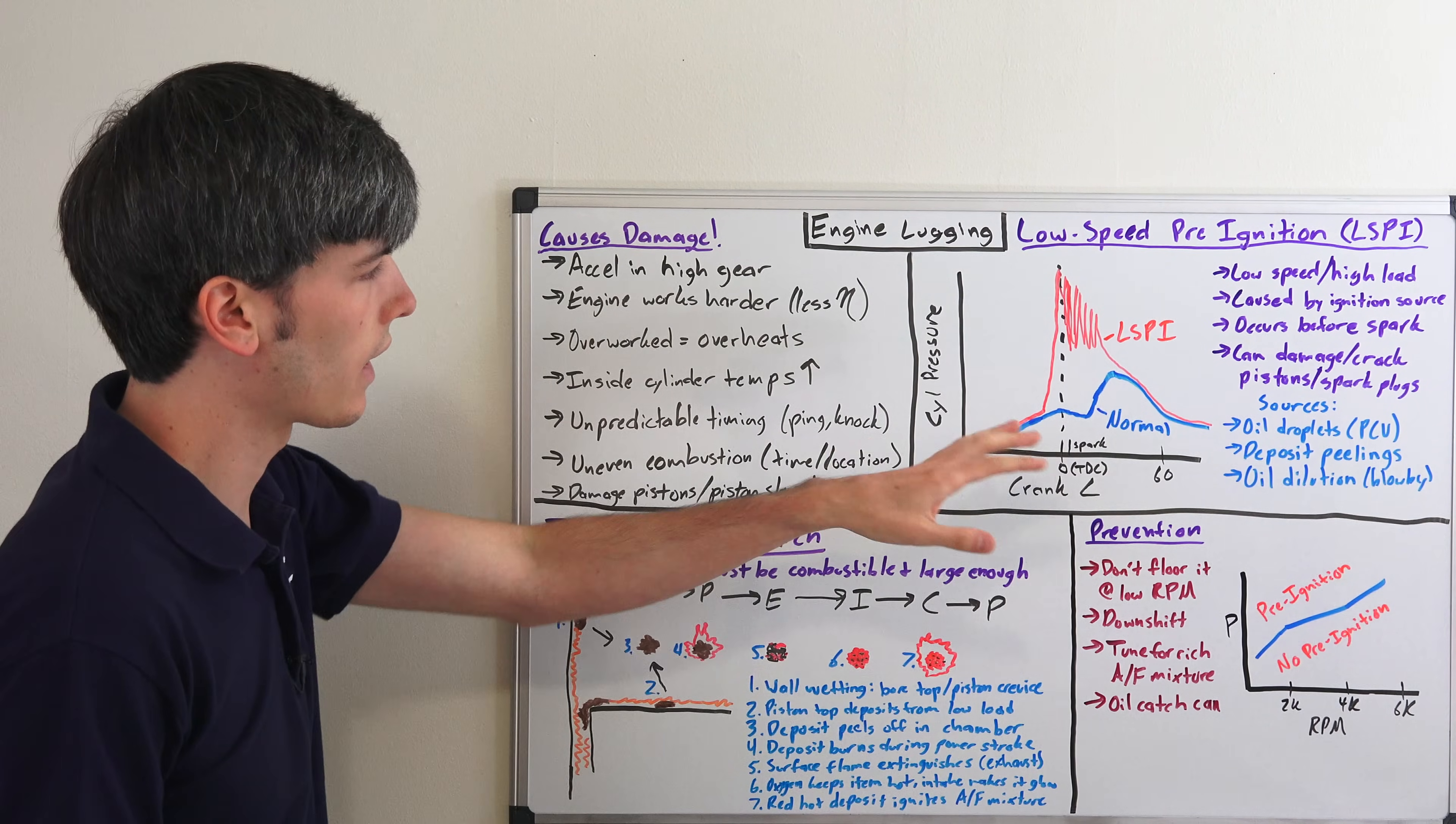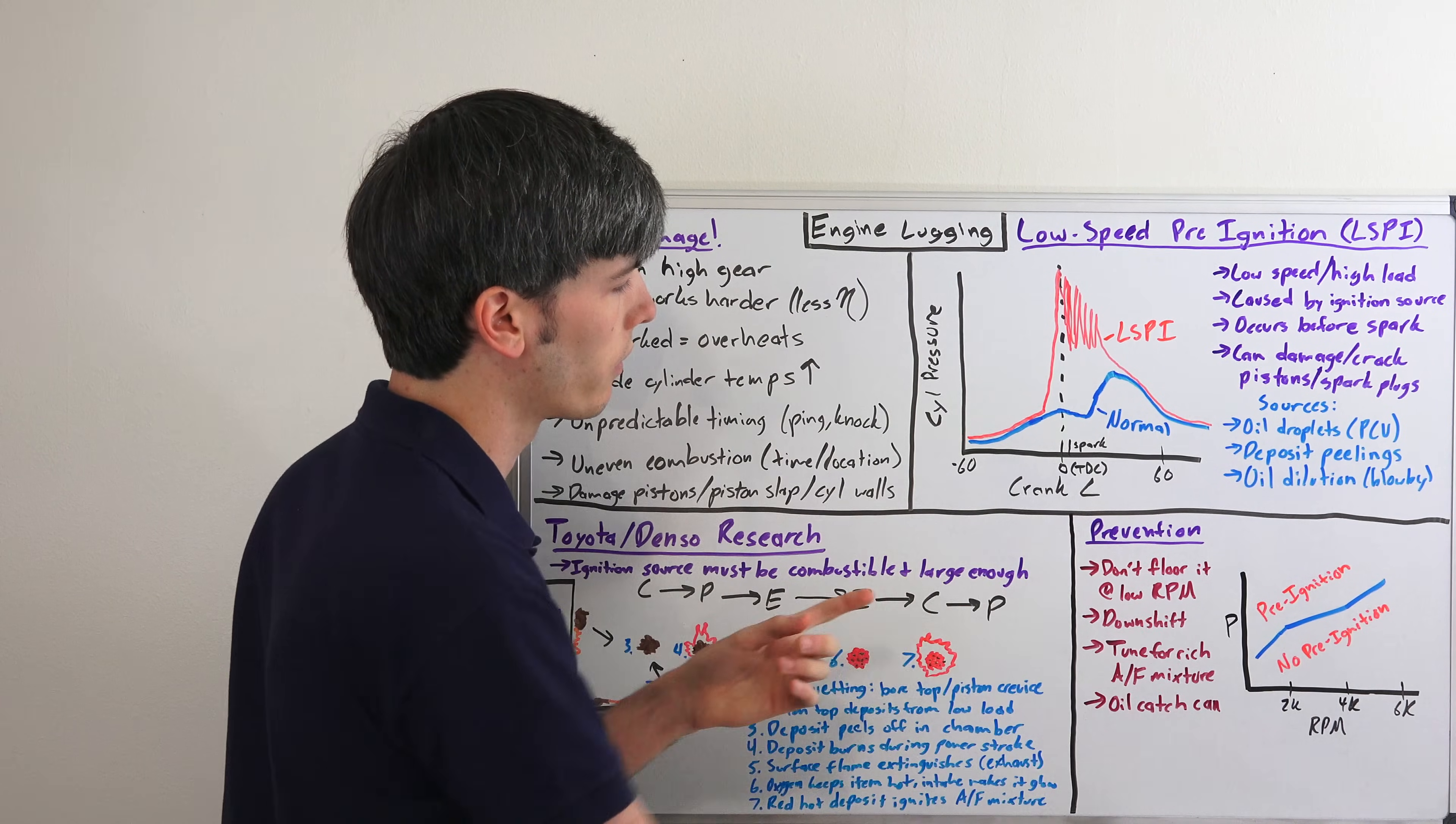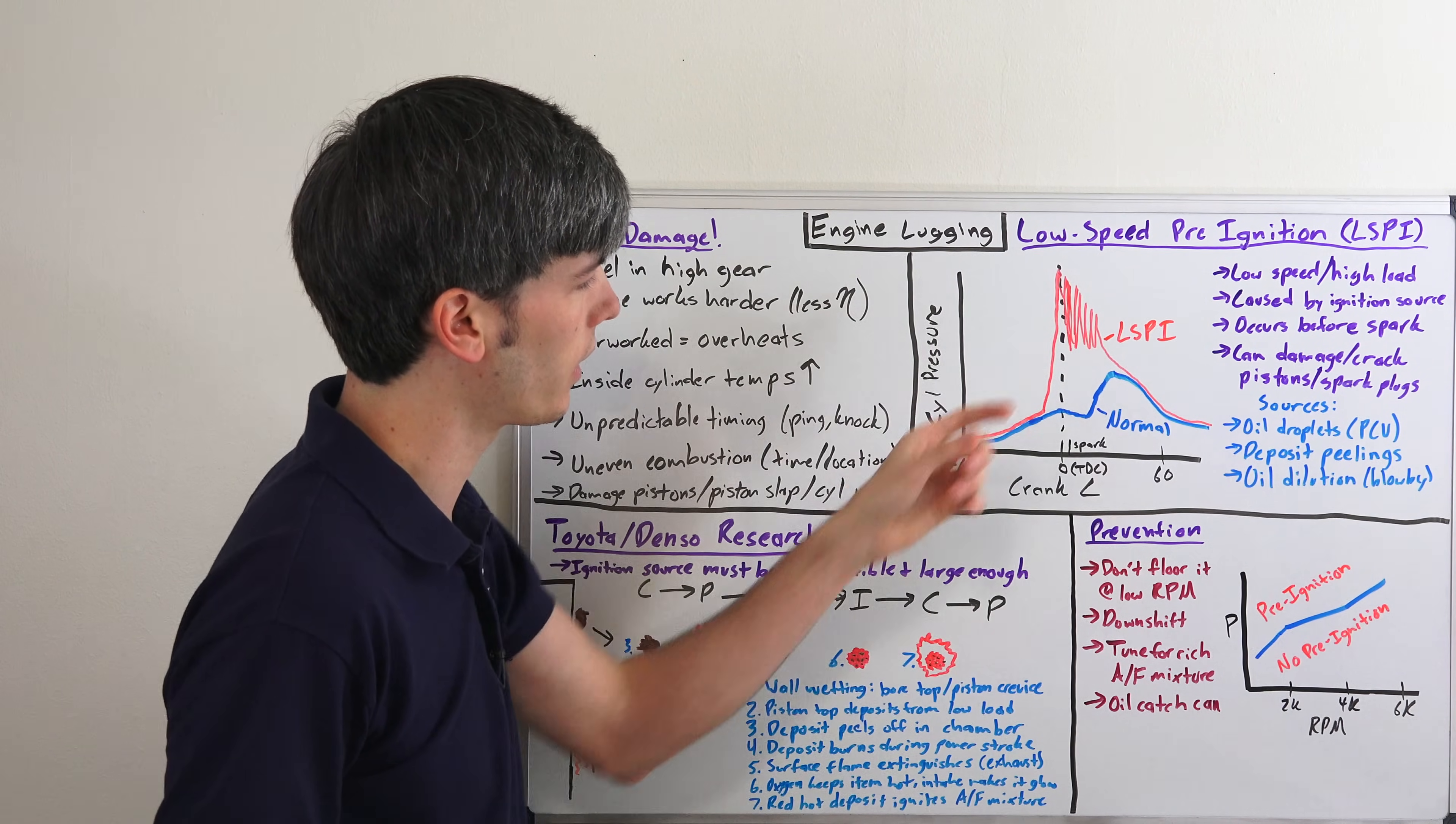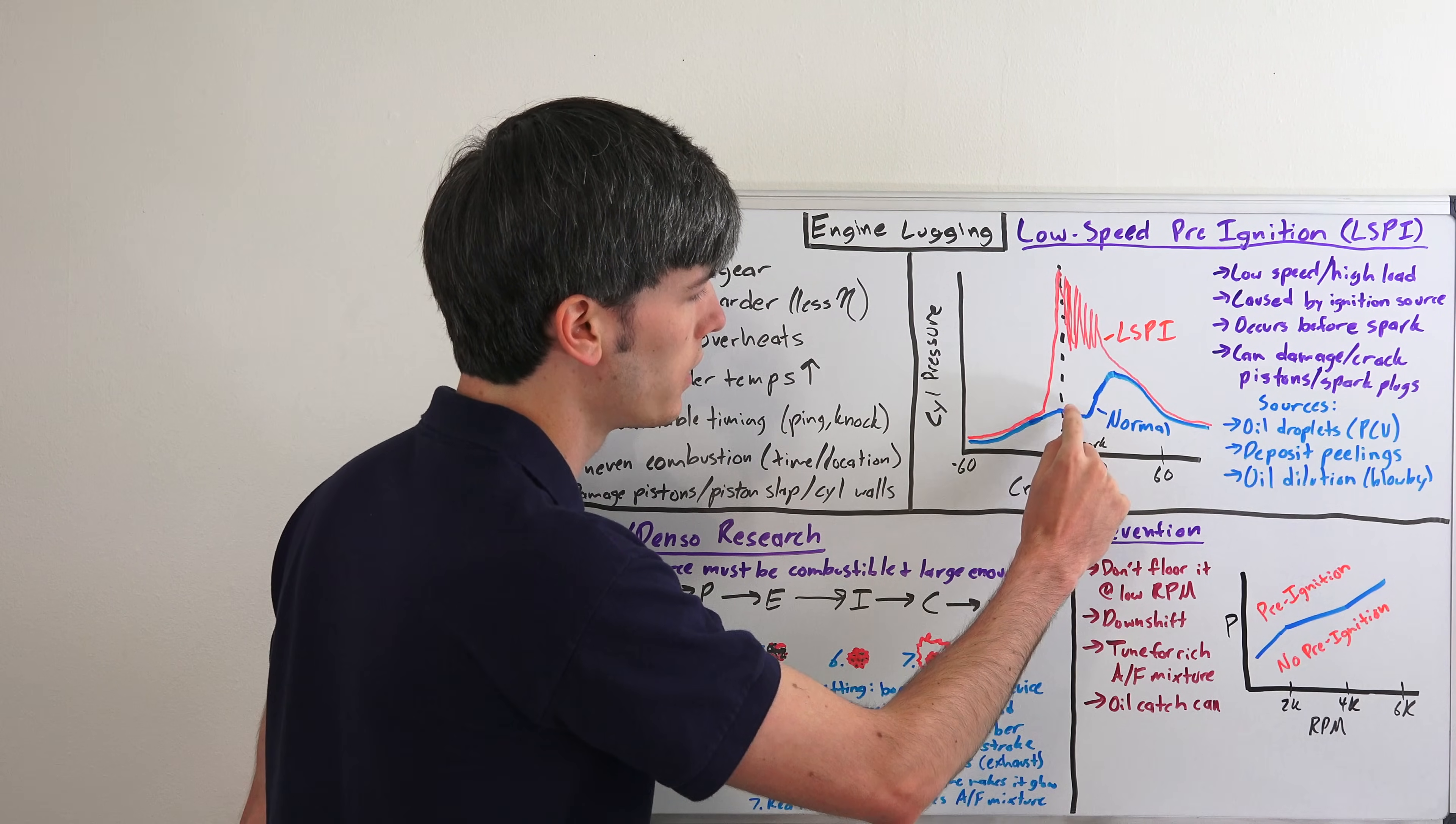What this looks like as far as pressure is concerned is here. We've got our cylinder pressure on the left and here we've got our crank angle - zero in the center, that would be top dead center.